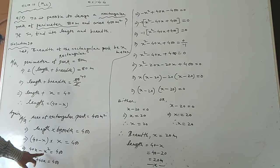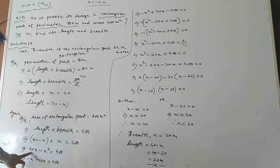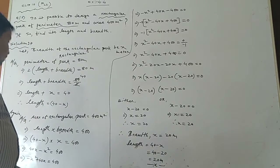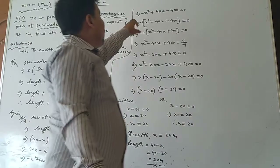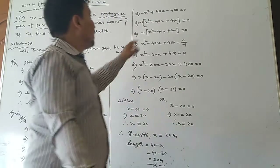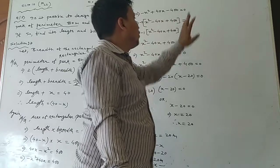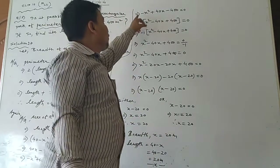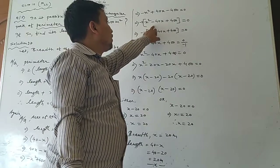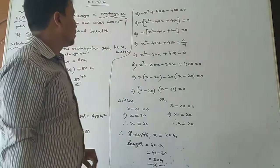Multiply: x into 40 gives 40x, then minus x into x gives minus x squared, equal to 400. Write x squared term first and x term second by commutative law. So minus x squared plus 40x equals 400. Then shift 400 to the left side: minus x squared plus 40x minus 400 equals 0.